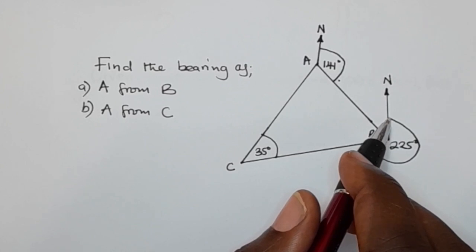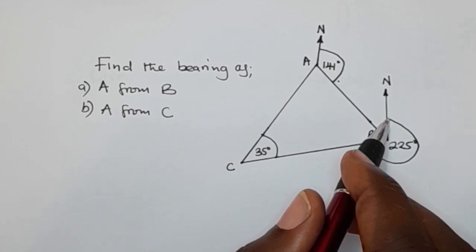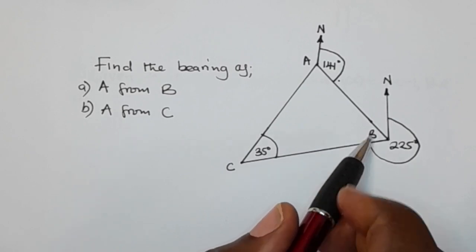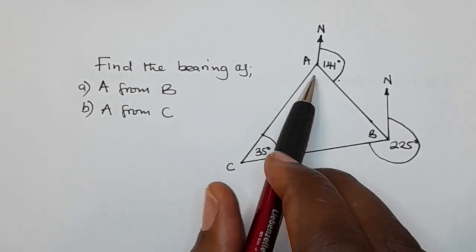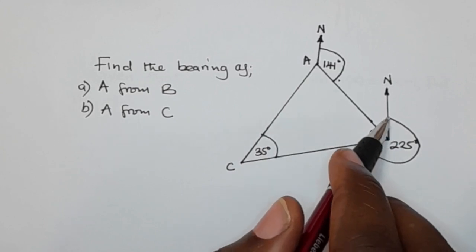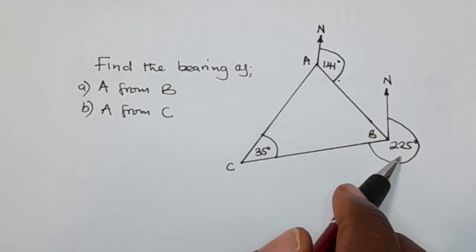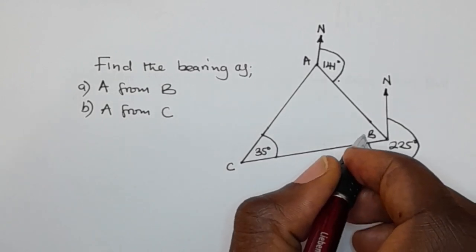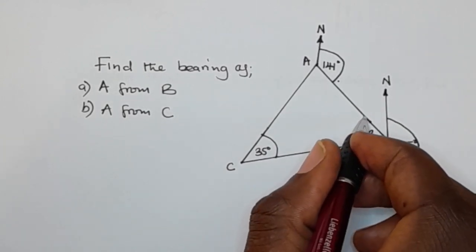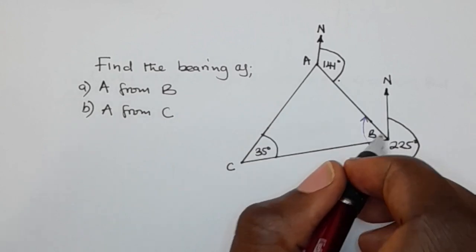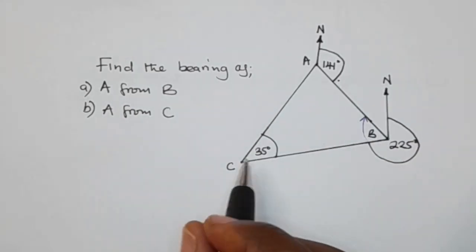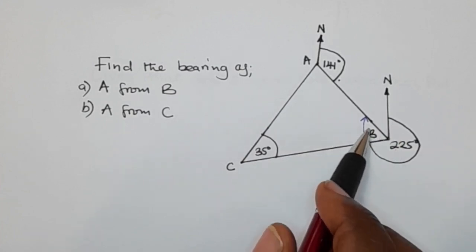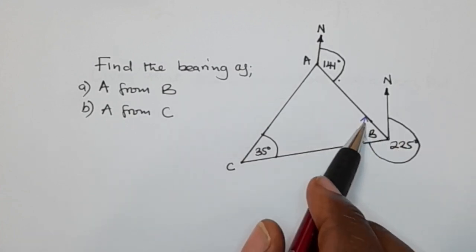So the bearing of A from B is: from this point, we move clockwise from the north until we reach the line that connects A and B. So this is the bearing that they want you to find.